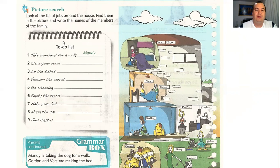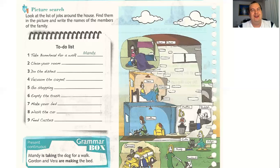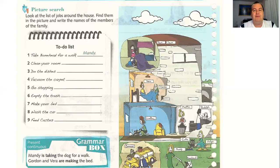A gente tem aqui uma lista de ações e precisa achar quais pessoas estão fazendo estas ações. Quem está fazendo o quê? Por exemplo, na number one: take Bonehead for a walk. O nome do cachorro que aparece no nosso livro é chamado de Bonehead — se a gente for traduzir literalmente, fica 'cabeça de osso'. Quem está levando o Bonehead para passear? A Mandy! She is taking Bonehead for a walk. Antes de você fazer o exercício, vamos dar uma olhadinha em cada uma das palavrinhas. Se você ainda não a sabe, pode colocar a tradução a lápis em cima ou embaixo de cada uma delas.